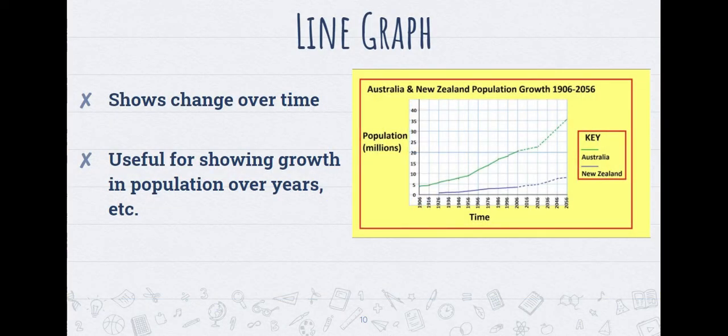Here we have a line graph. This is going to show change over time. A lot of the time in social studies and in history we're going to look at line graphs for population changes and things like that. We're looking for change over time in a line graph.